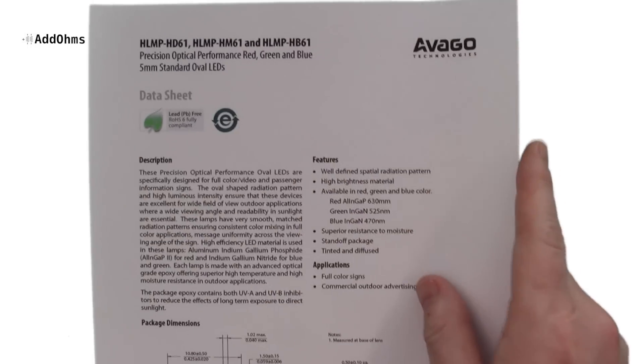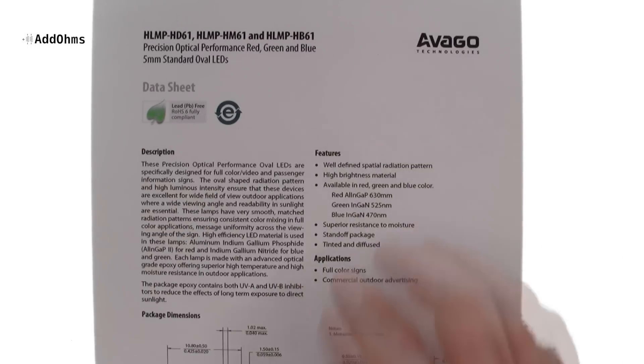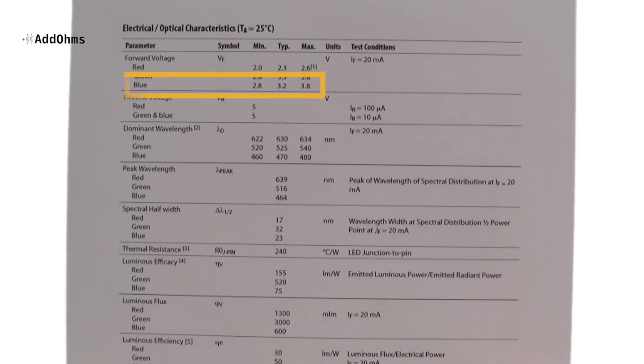For example, if we look at the data sheet for this blue LED, we can see that its forward voltage is around 3.2 volts.